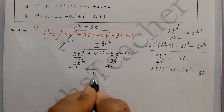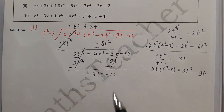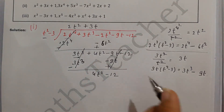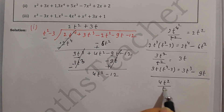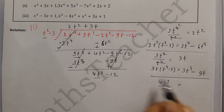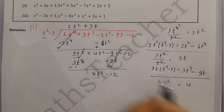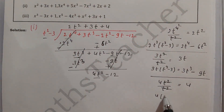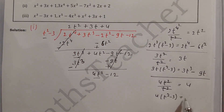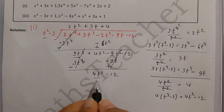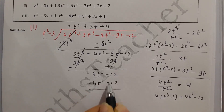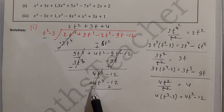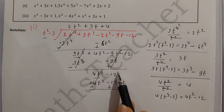Now the remaining term is 4t² − 12. The degree is 2, same as divisor degree 2, so we divide again. 4t² divided by t² gives quotient 4. We multiply 4 by t² − 3, giving 4t² − 12. After sign change and subtraction, 4t² − 12 cancels completely.